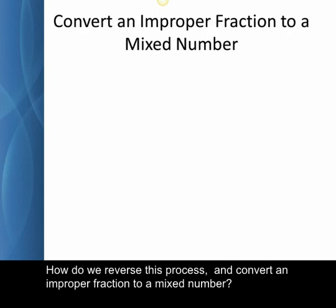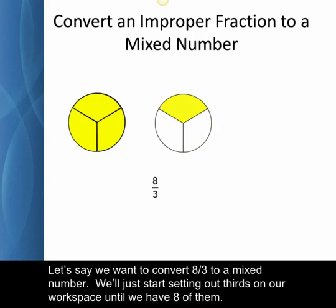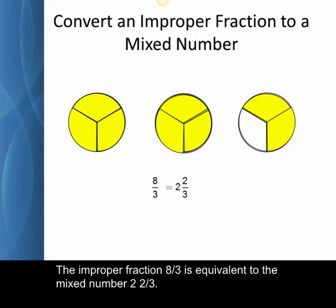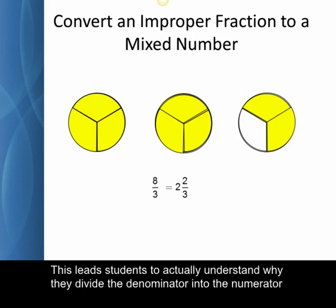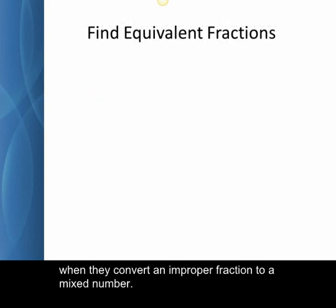How do we reverse this process and convert an improper fraction to a mixed number? Let's say we want to convert eight-thirds to a mixed number. We'll just start setting out thirds on our workspace until we have eight of them. Every group of three-thirds forms one whole, right? So with eight-thirds we have two wholes and two more thirds left over. The improper fraction eight-thirds is equivalent to the mixed number two-and-two-thirds. This leads students to actually understand why they divide the denominator into the numerator when they convert an improper fraction to a mixed number.